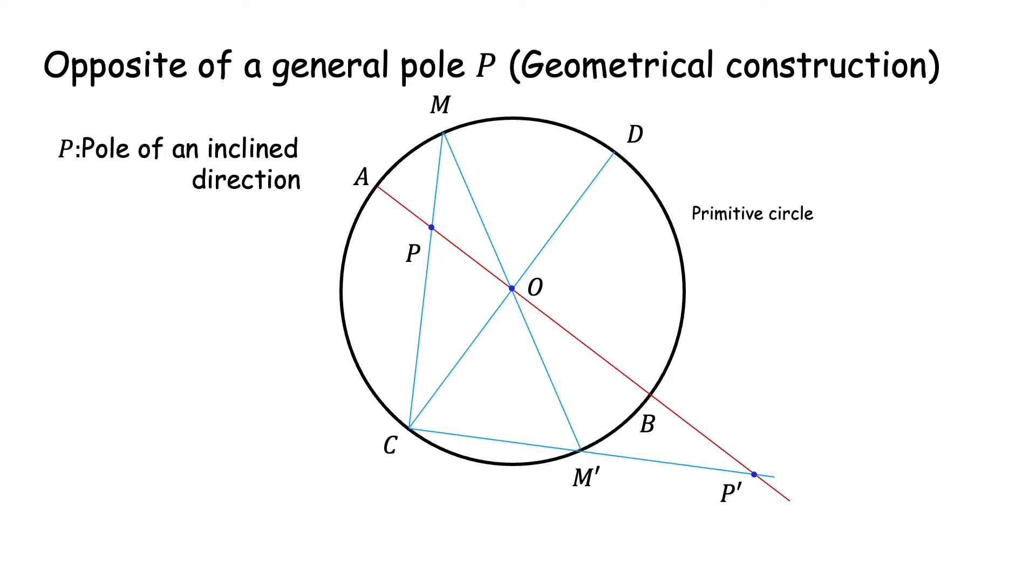Note that the angle, angle MCM', this angle is a right angle, is 90 degrees because it is an angle subtended by the diameter MM' of the primitive on the circumference of the primitive. Angle subtended by a diameter on the circumference of a circle is always 90 degrees. MCM' is a 90 degree angle. Once we note this, we can simplify the construction.